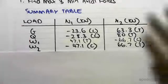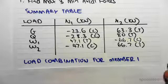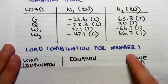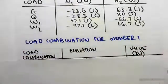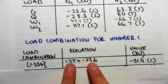So now we're going to do the load combinations for member one. We create a table like this: load combination, equation, and the value in kilonewtons. So let's do 1.35G first, so it's going to be 1.35.